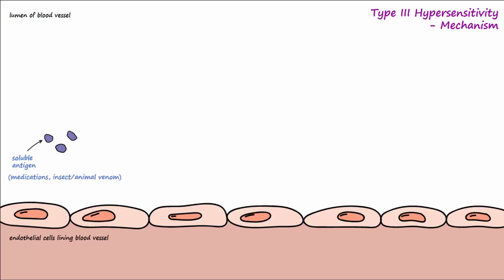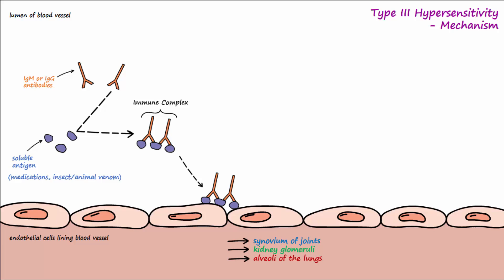When soluble antigens like medication, insect venom, or animal venom enter blood circulation, IgM or IgG antibodies detect and bind to them, forming antigen-antibody complexes, also known as immune complexes. These immune complexes attach to the endothelium of blood vessel walls or to other tissues like the synovium of joints, the glomeruli of kidneys, and the epithelial lining of alveoli in the lungs.